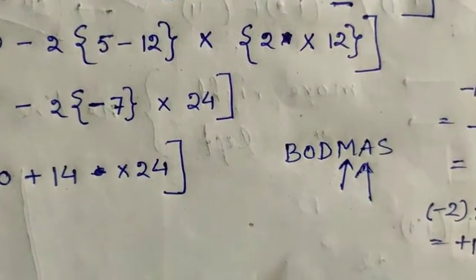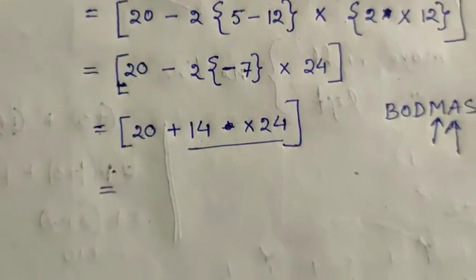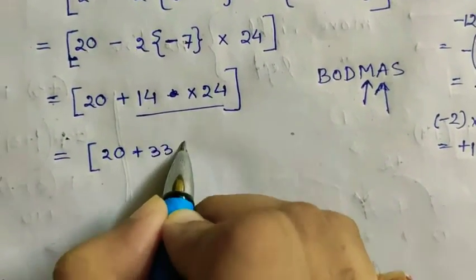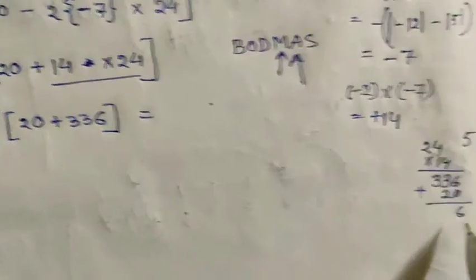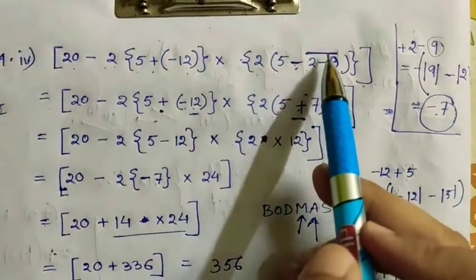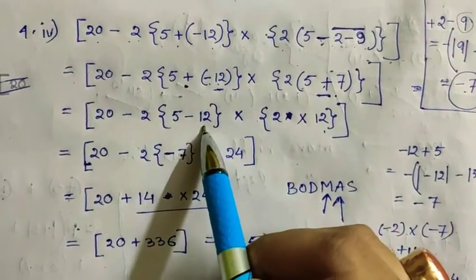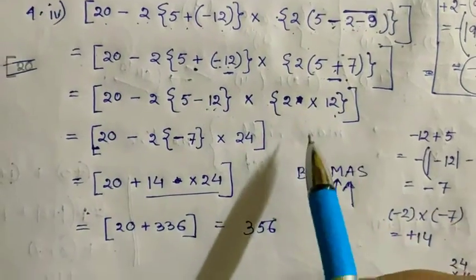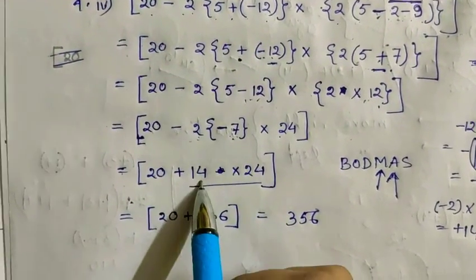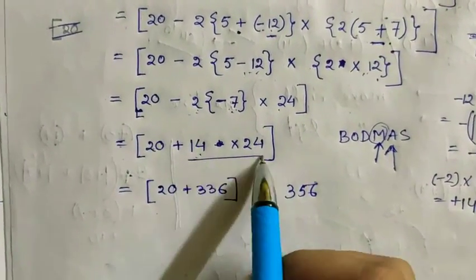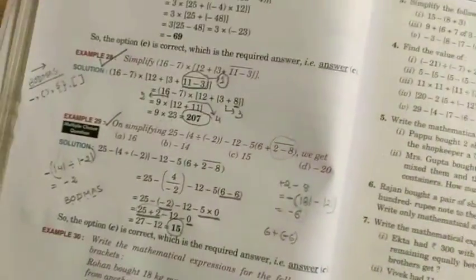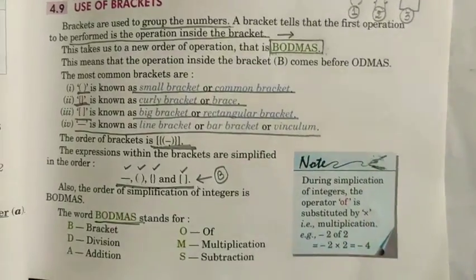According to the BODMAS rule, multiplication comes before addition, so we do this multiplication first: 14 into 24 equals 336. Then 20 plus 336 equals 356. So 356 is our answer. The sequence was: first bar bracket, then small bracket, then we multiplied — the minus minus became plus 7, giving 14 — then multiplication, then addition. This is the last part of our chapter on the use of brackets.